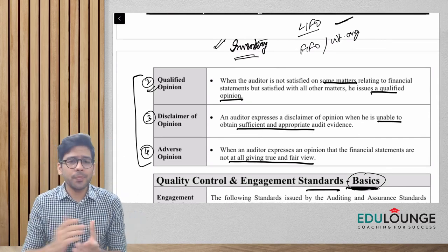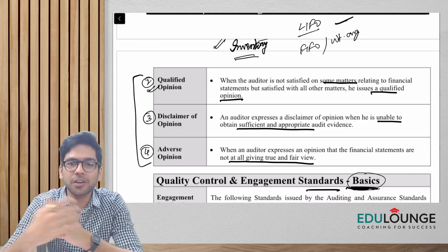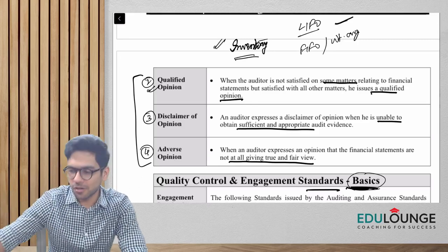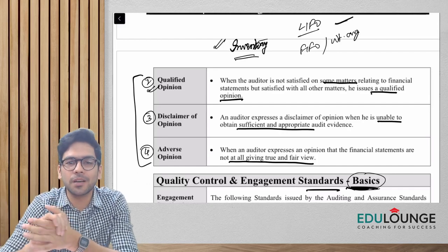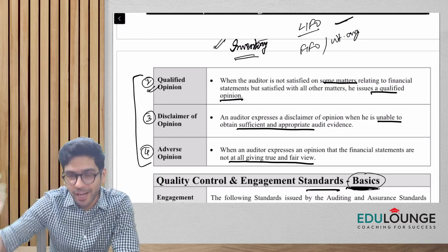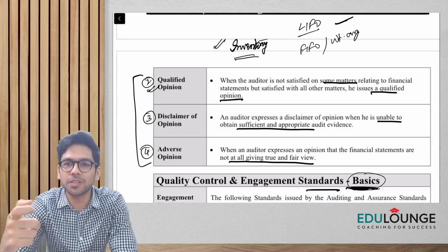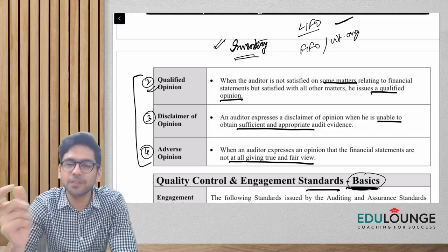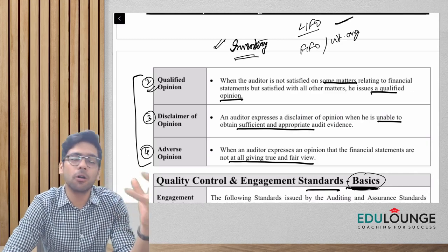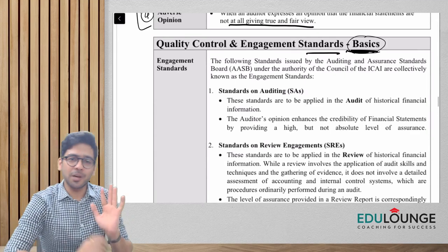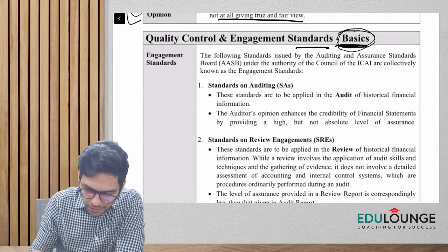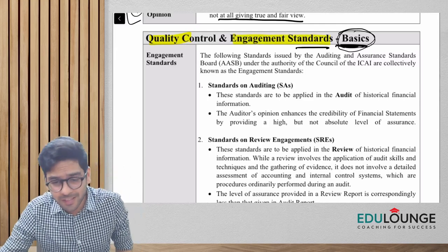Today we shall start a new topic. As mentioned in the introductory session, the majority of our CA Final syllabus pertains to standards — standards on auditing, standards on review assurance, or other services. We need a good knowledge of all the standards. We are still in the fundamentals chapter, chapter zero, and today we start with the basics of quality control and engagement standards.